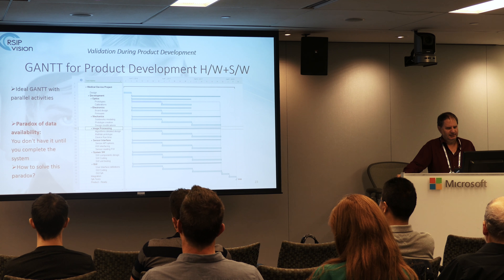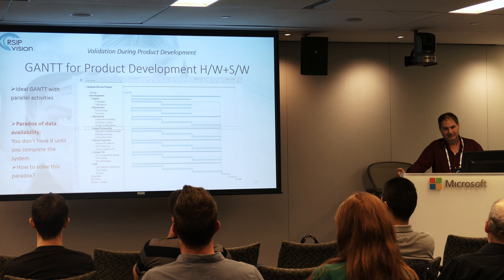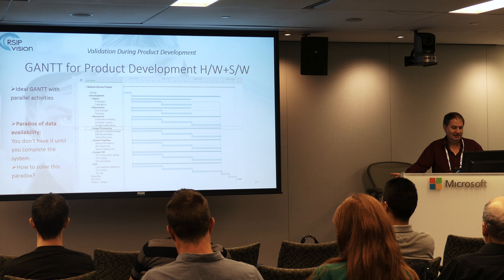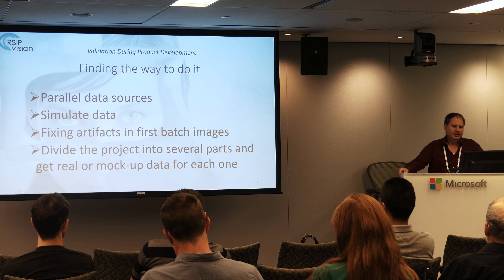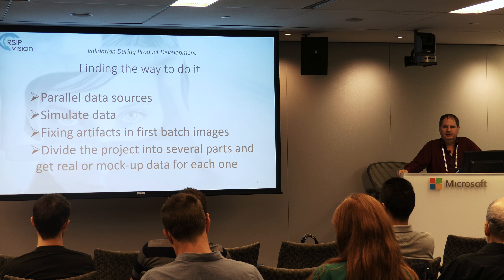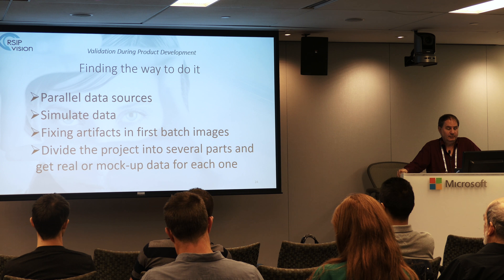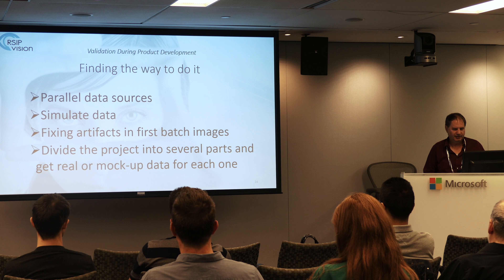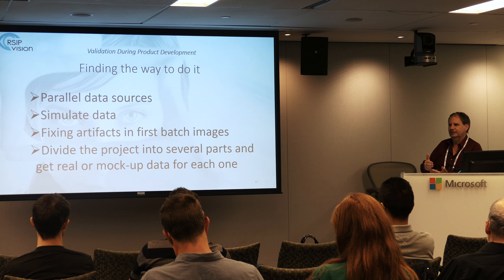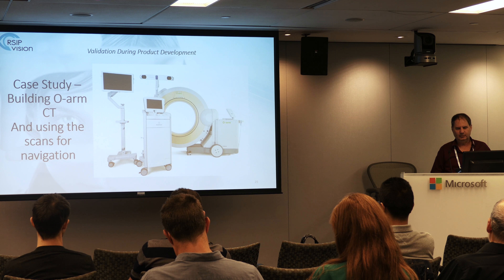We develop the optics, electronics, system software, and GUI all in parallel — but there's a catch. For the image processing team, we don't have any images at the beginning; all the real images will come at the end. So we have some options connected to how we create the roadmap: we can get parallel data sources, simulate data, fix artifacts from the first batch. The way to do it is to divide the project into different parts, and in each part have some way to develop and test it.